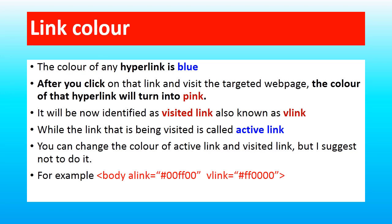Since you visited that link, it is identified by the web browser as a visited link. Such a visited link is also known as vlink, while a link that is currently being visited is called an active link. Active link is identified as alink. To distinguish visited link and active link, different colors are used by the web browser by default.